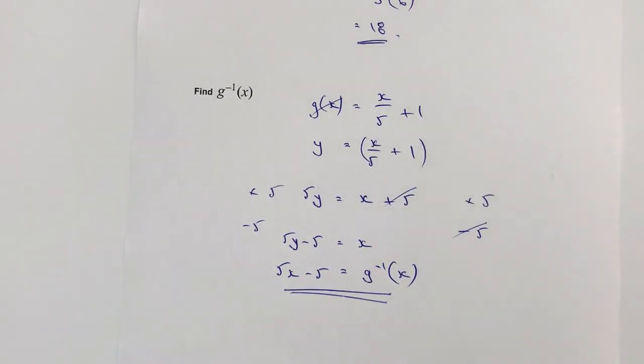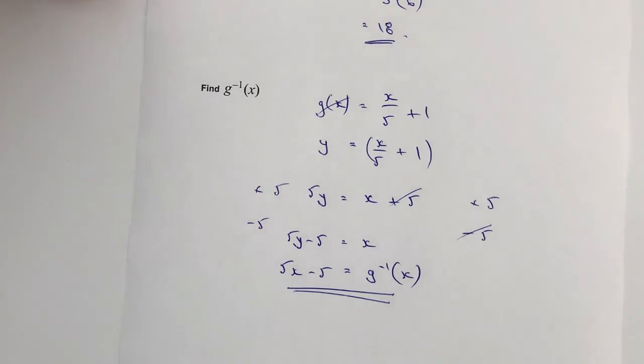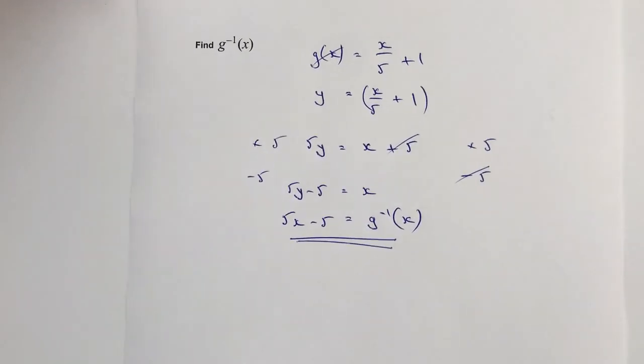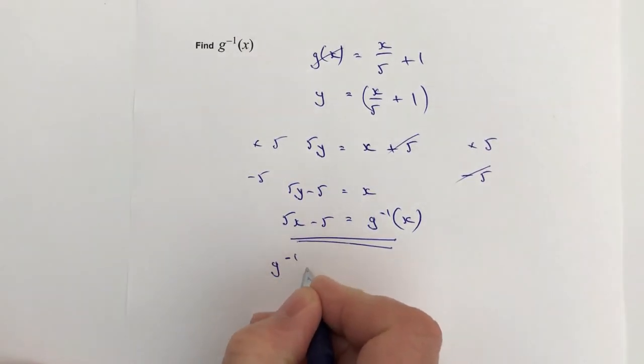Now the difficulty I think with this one is because you're isolating your x on the right hand side, it just looks a little bit odd, because we're so used to dealing with working from left to right.